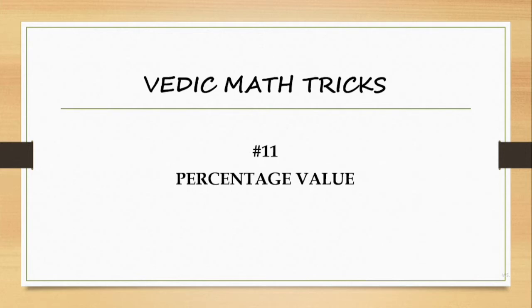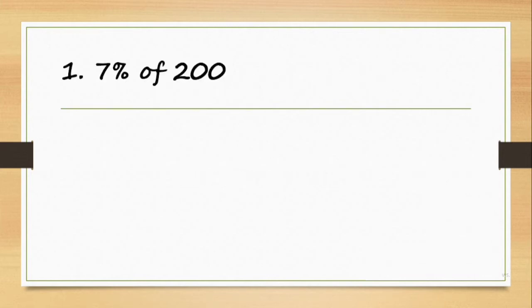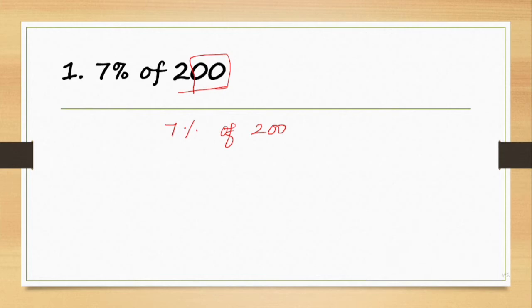So, questions ask about percentage value tricks. It is applicable when the last two digits are 0. For example, 7% of 200 — the last two zeros are cancelled, remaining is 7 into 2, so 7% of 200 is 14.